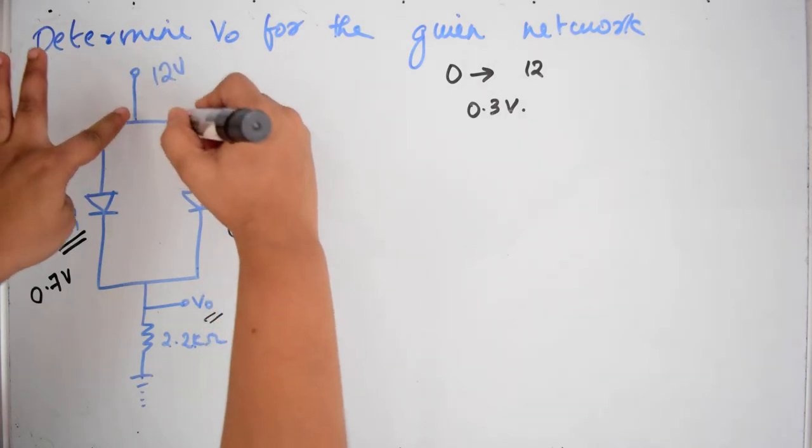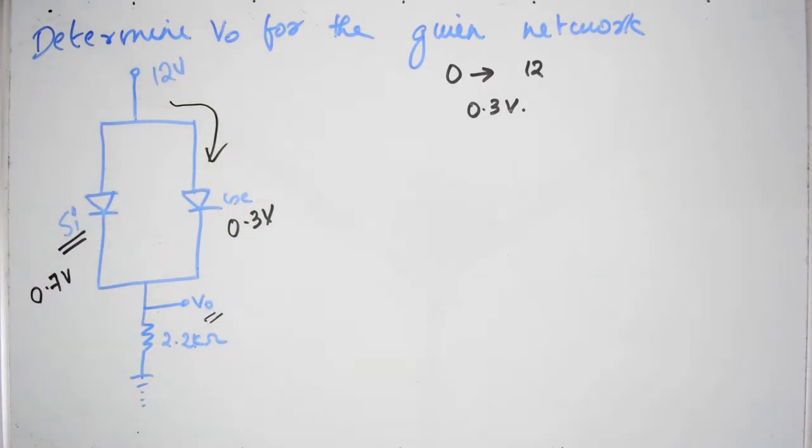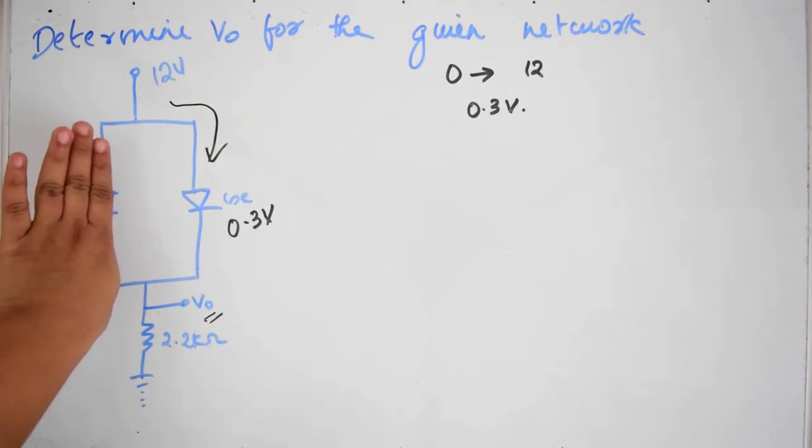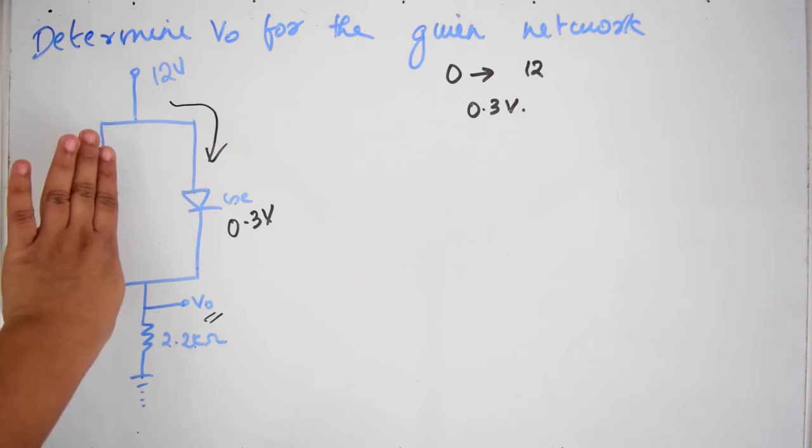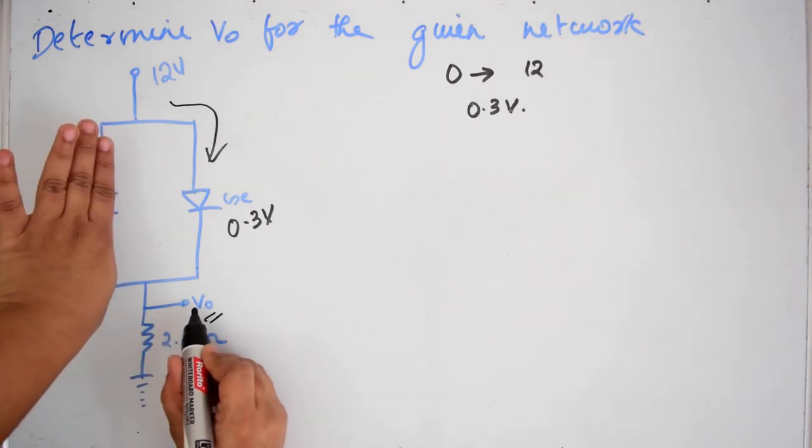So this entire current will flow through this path. There is no question of this silicon diode. So what will be the value of V0 at that time?